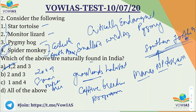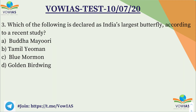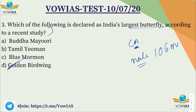Question number 3: Which of the following is declared as India's largest butterfly according to a recent study? Options are A, Budha Mayuri; B, Tamil; C, Blue Mormon; D, Golden Birdwing. The answer is D, Golden Birdwing. The male counterpart has a wingspan of 106 millimeters, but the female's wingspan is 194 millimeters.